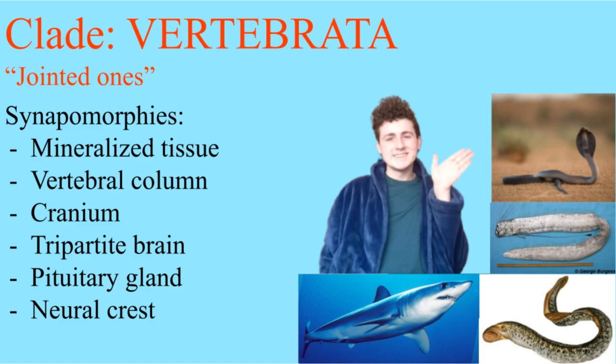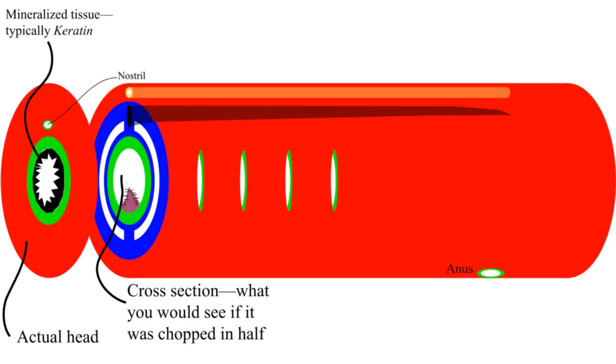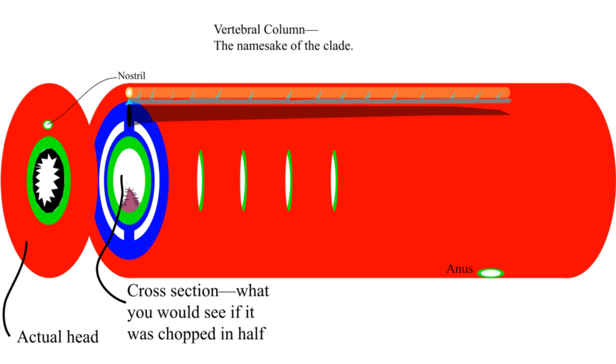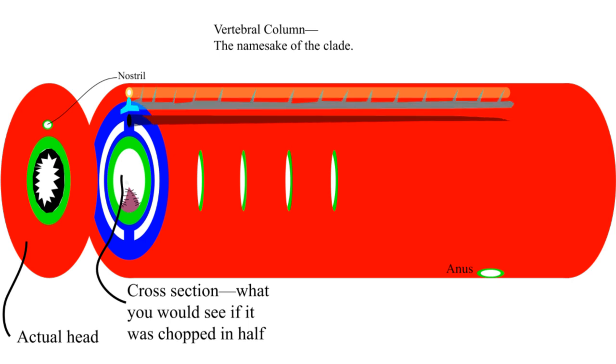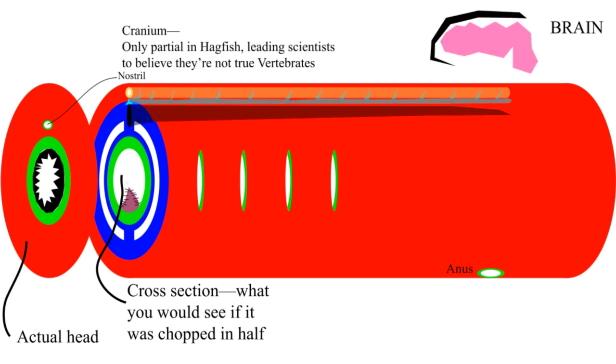Vertebrata have six major synapomorphies. The first is some sort of hard tissue that can take a hit, which is used to form some sort of structure surrounding the dorsal hollow nerve cord and often displacing the notochord, as well as some sort of case for the brain, which is now cut up into three parts and containing a pituitary gland.